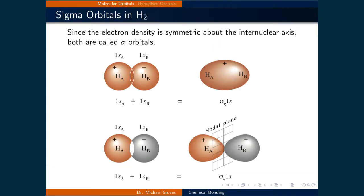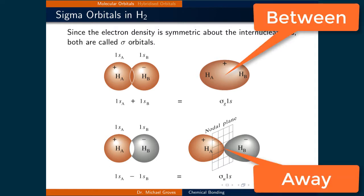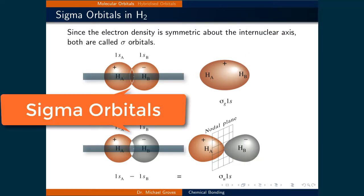Here are two illustrations that demonstrate the concentration of electron density between and away from the center of the two nuclei, depending on if the orbital is bonding or antibonding due to constructive or destructive interference. Since the electron density is symmetric about the internuclear axis, meaning along the axis that goes through the two nuclei, both are called sigma orbitals.